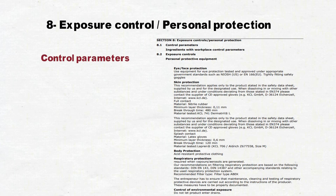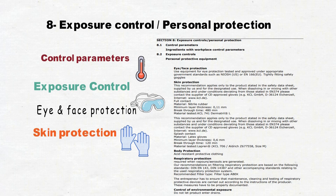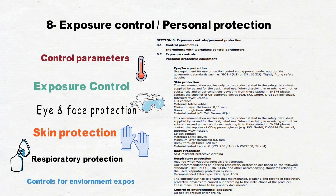Section number 8 is about Exposure Controls and Personal Protection. For example, some work areas have control parameters to monitor humidity and temperature. People also use PPE as a minimum requirement to protect themselves — for example, eye and face protection, skin protection like gloves, respiratory protection like a mask, and also protecting the environment by not allowing specific chemicals to reach the soil.